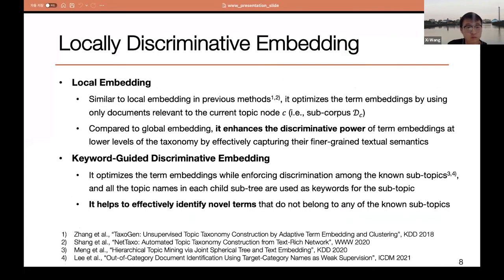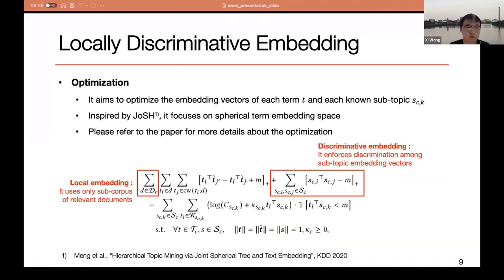In this video, I will skip most of the technical details, so please refer to our full paper if you are interested. The first step is the embedding step, which creates a discriminative embedding space. To this end, Taxocom adopts two techniques: local embedding and keyword-guided discriminative embeddings. This is the objective for optimizing our term embedding space, and these two parts in red boxes play a role of enhancing the discriminative power in their own way.